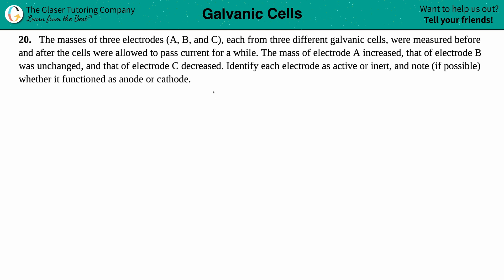Number 20. The masses of three electrodes labeled A, B, and C, each from three different galvanic cells, were measured before and after the cells were allowed to pass current for a while. The mass of electrode A increased, that of electrode B was unchanged, and that of electrode C decreased. Identify each electrode as either active or inert, and note if possible whether it functioned as an anode or a cathode.